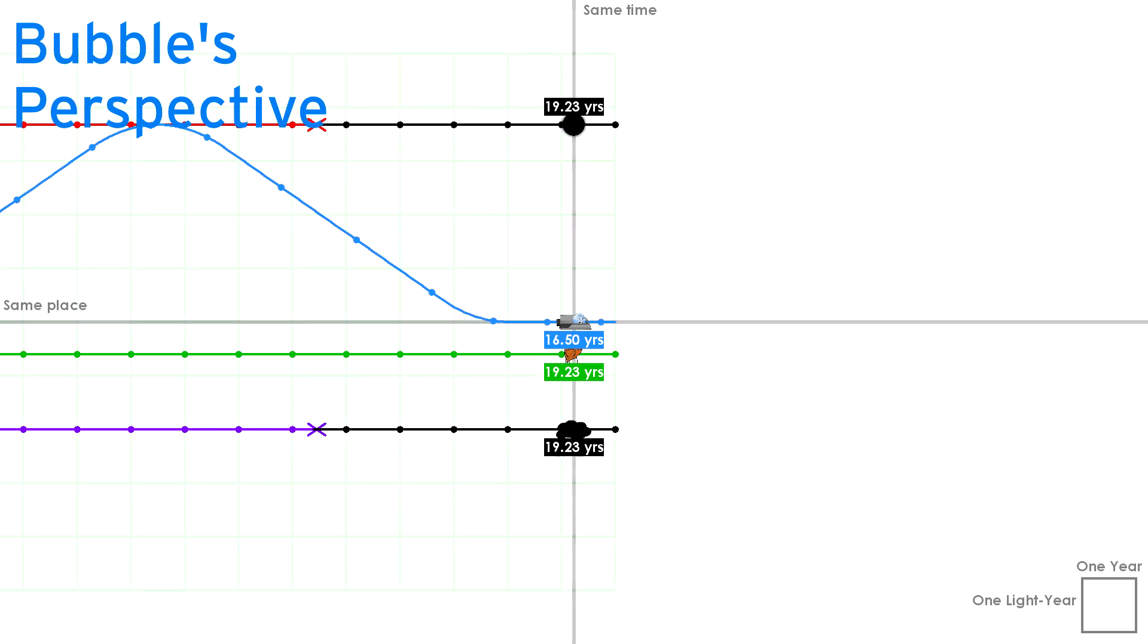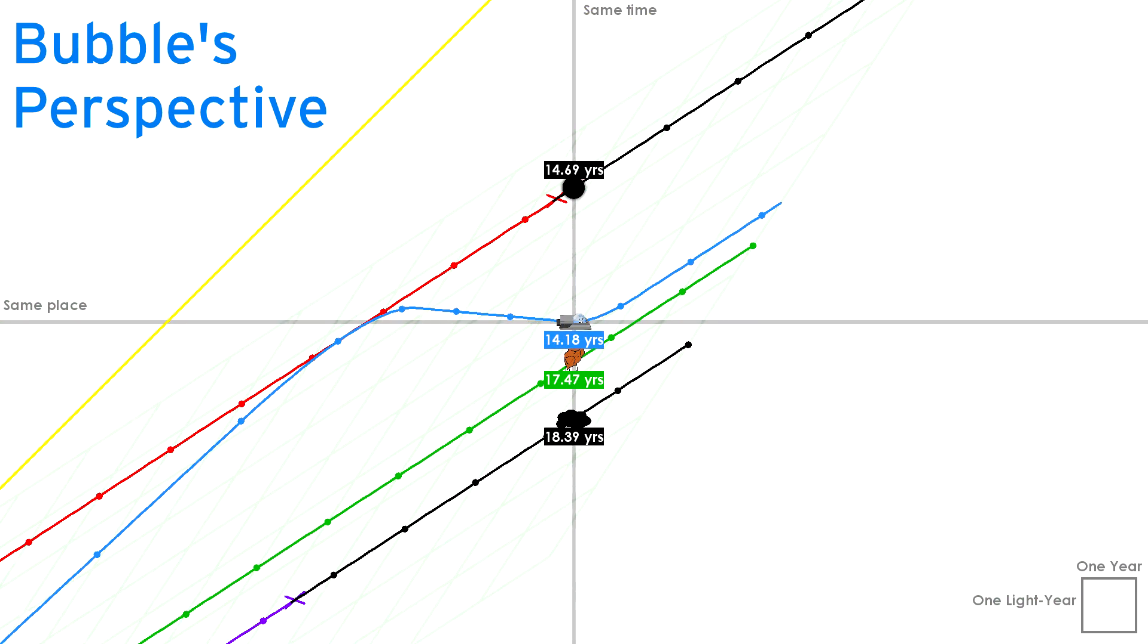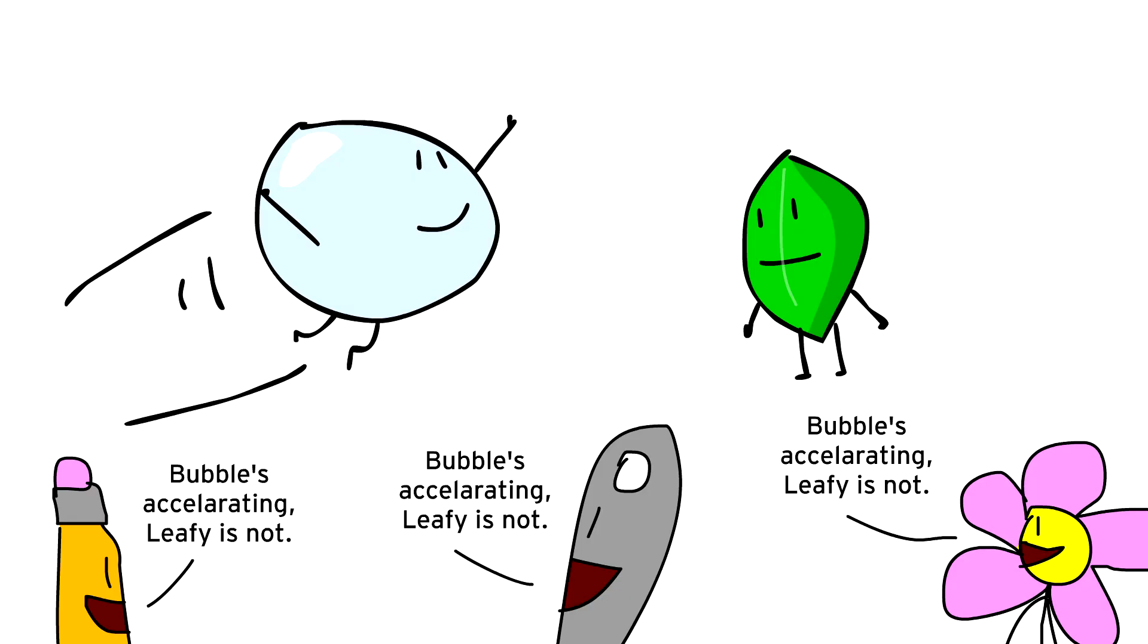The answer is in Bubble's acceleration. At three points, Bubble accelerates, whereas Leafy never does. Unlike velocity, acceleration is not relative, meaning that regardless of whose frame of reference you're following, you'll always see Bubble as the one who's accelerating and Leafy as the one who's not.